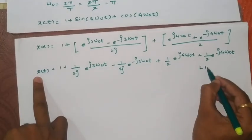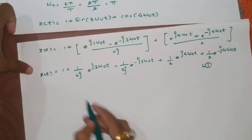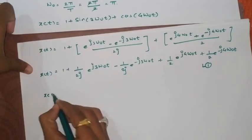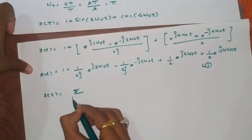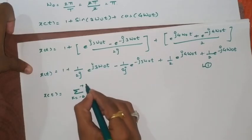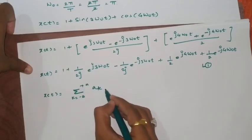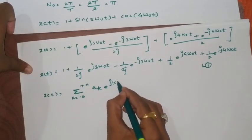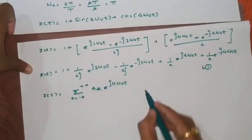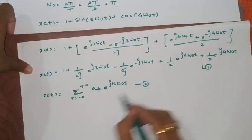Now if I consider this as equation number 1 I can compare this with standard form of Fourier series representation which is summation ak into e raised to jkω0t, this is I am putting it as equation number 2.